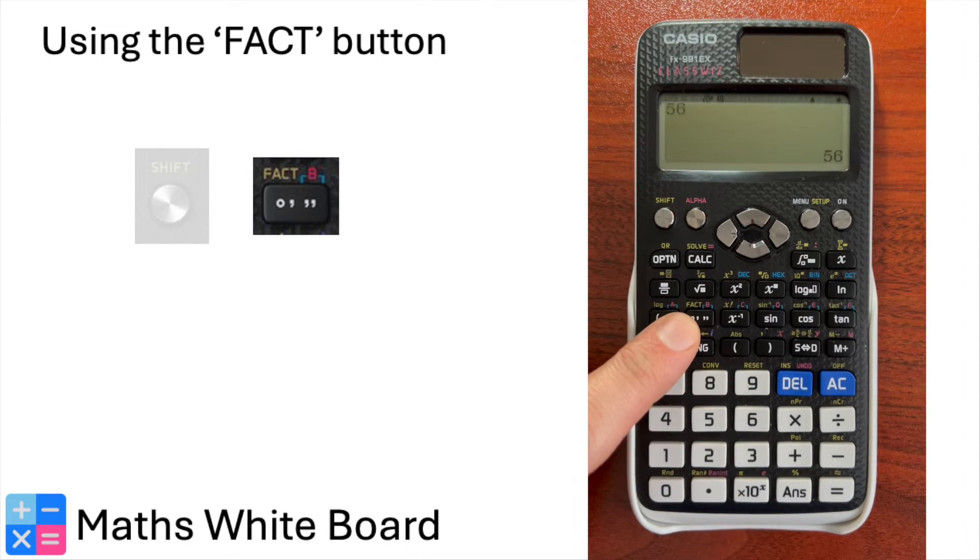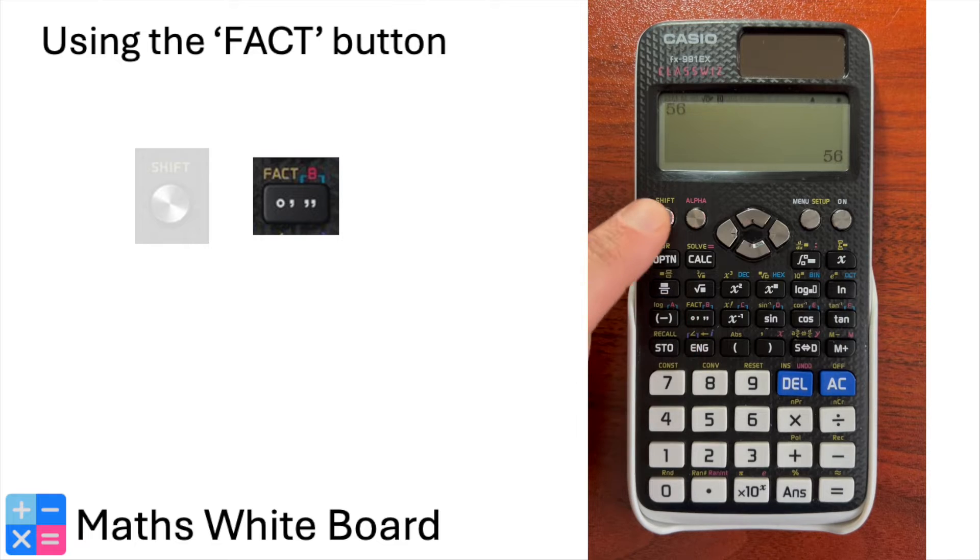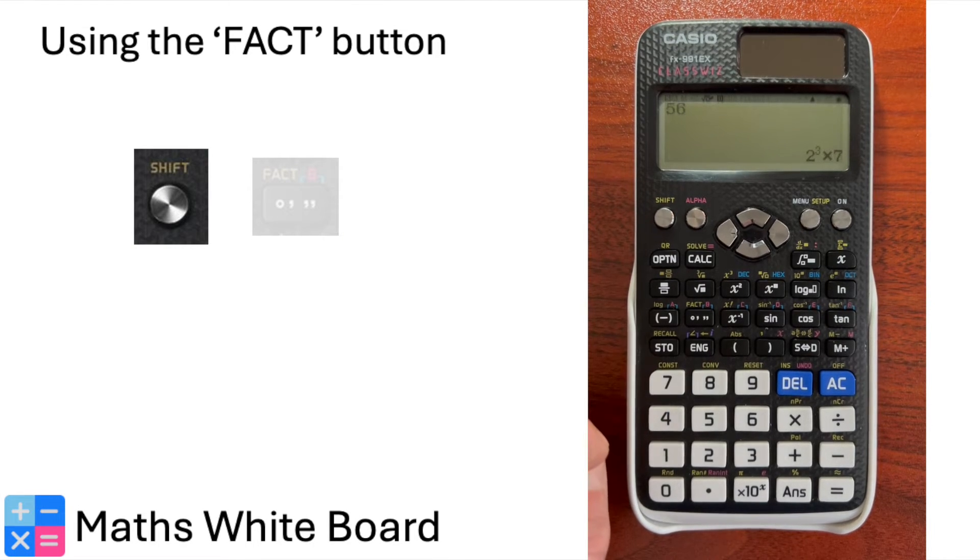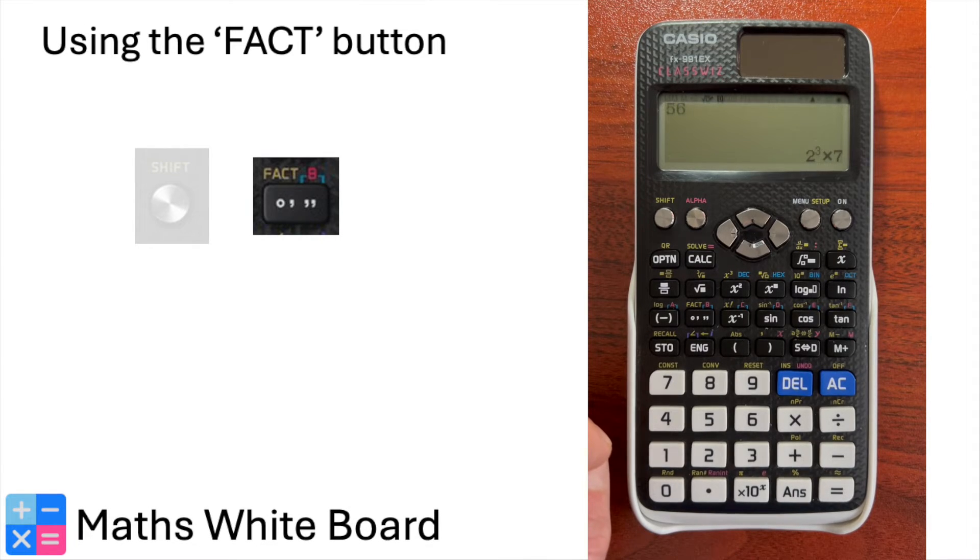This is usually denoted as FACT and is a secondary function of a button activated by using the shift key first. Select shift, then the FACT button to run the prime factorization function.